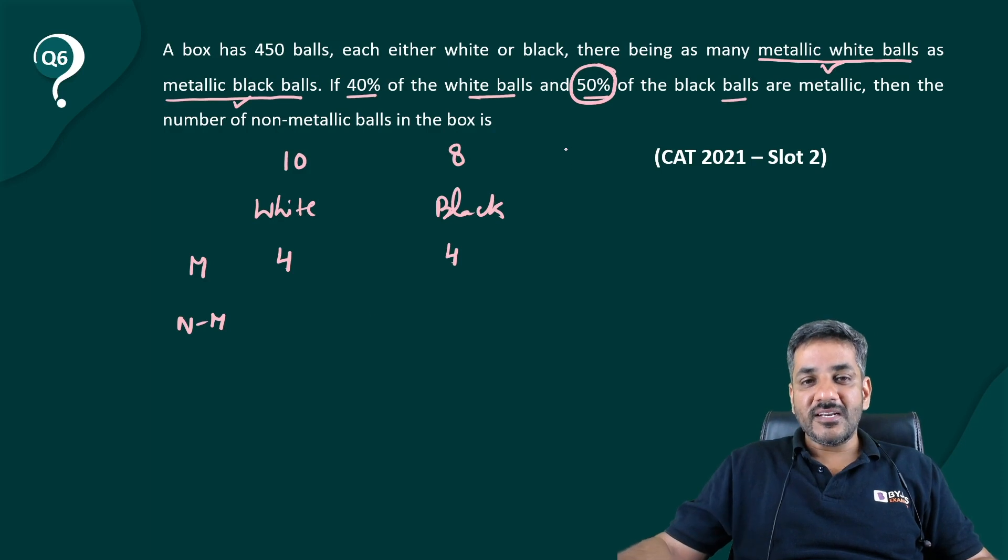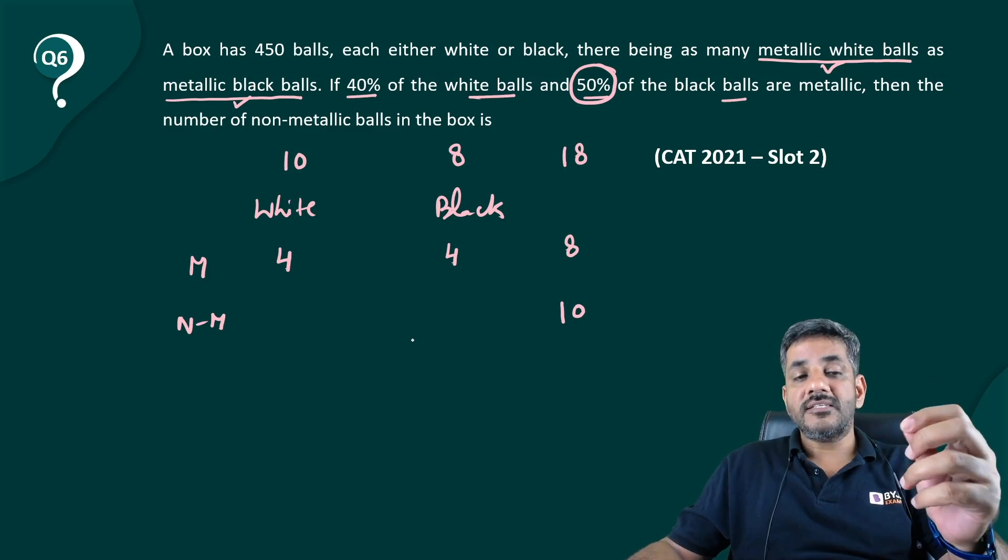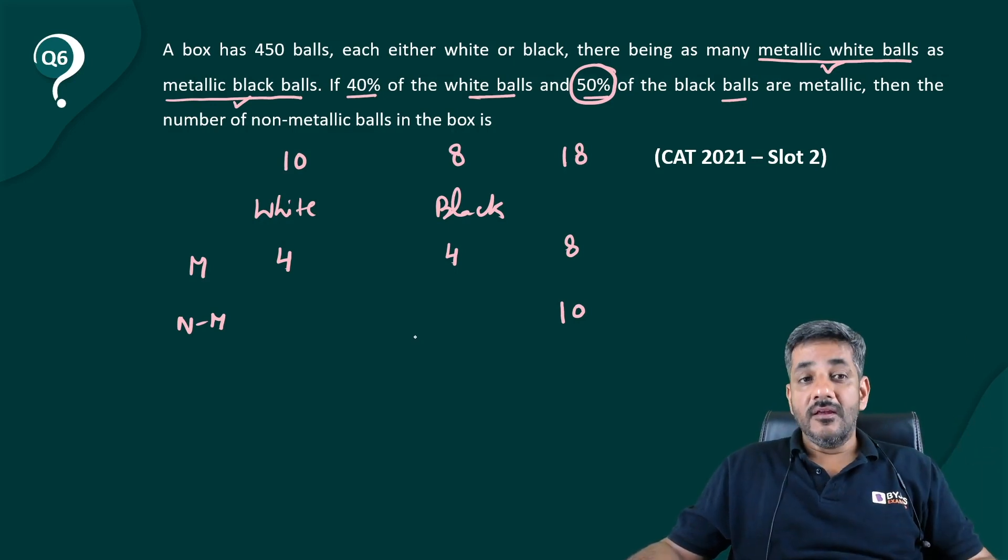According to us, the total number of balls is 18. Eight of them are metallic, automatically 10 of them would be non-metallic. So in another way, you can say that out of every 18 balls, 10 are non-metallic. The question is